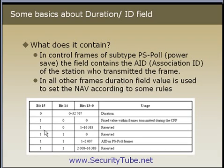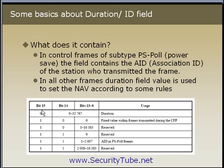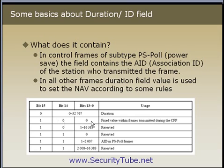If only the uppermost bit is set to 1 and the 14th bit is set to 0, and all other bits are between 1 and 16383, then it is again a reserved case. If bit 15 is set, bit 14 is set to 0, bit 13 is also set to 0, or bits 0 to 13 are set to 0, then it's a fixed value within frames transmitted during the CFP. The CFP mode is a special mode in IEEE 802.11, and if only the MSB is set and all other bits are reset to 0, it's a CFP case.